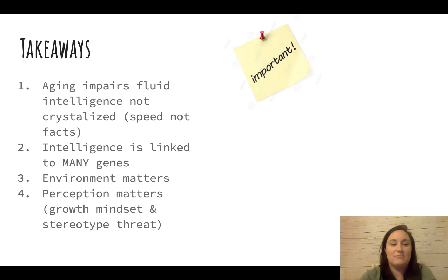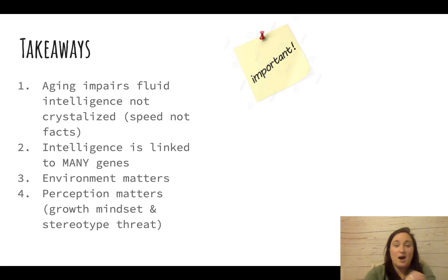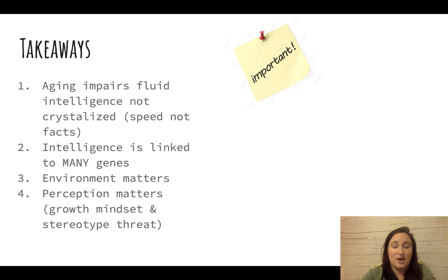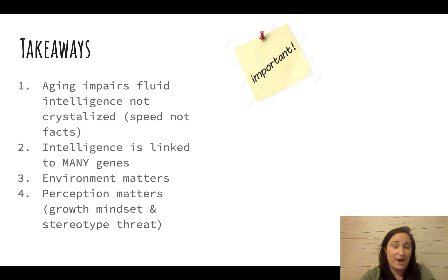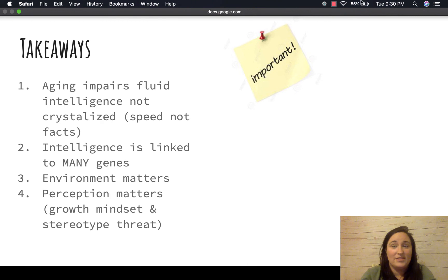Key takeaways: aging impairs fluid intelligence but not crystallized intelligence. Intelligence is polygenic and environment matters a lot — especially deprivation, which can have the most negative effect on cognitive development. Finally, perception matters: believing that you are capable of doing well has a huge impact on how well you actually perform. That wraps up Unit 11.